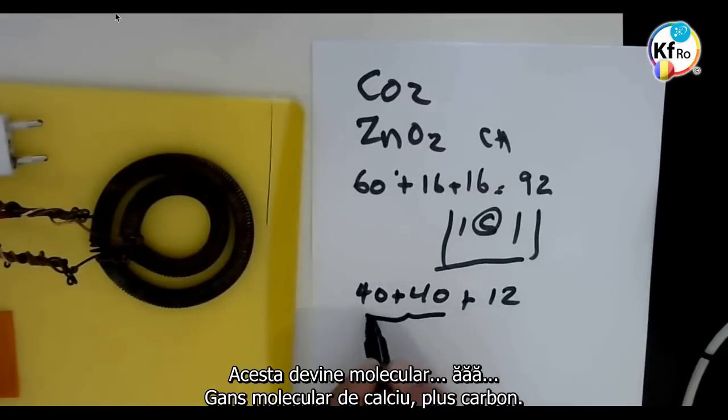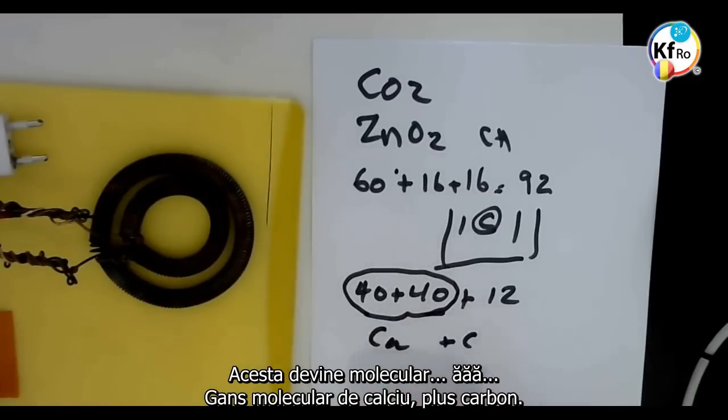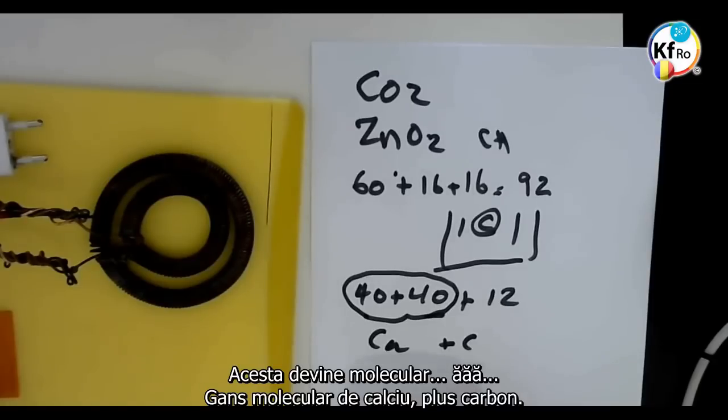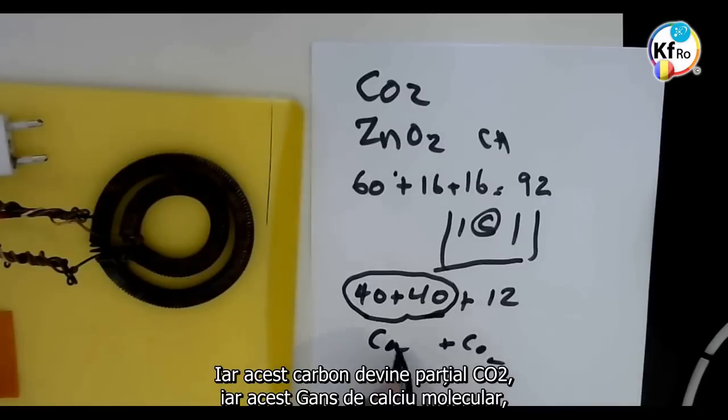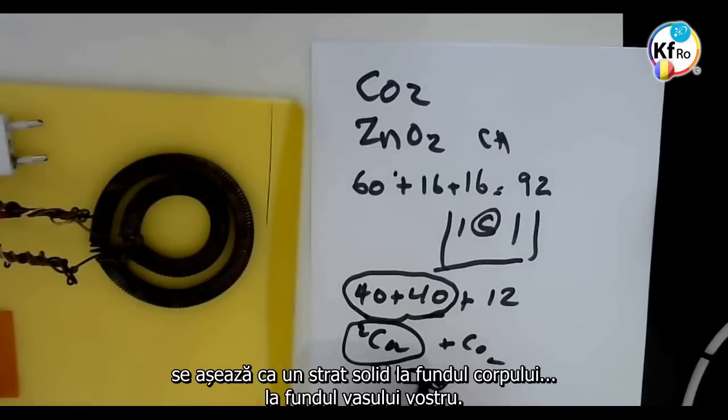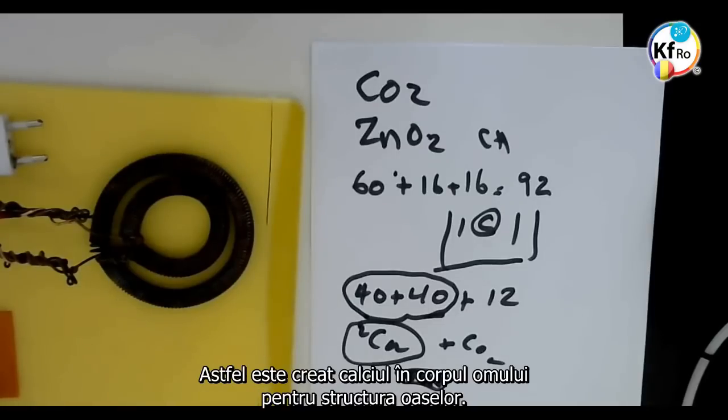These two become molecular GANS of Calcium, plus the carbon, which that carbon becomes partially CO2. And this molecular Calcium GANS is a solid bit at the bottom of your container.